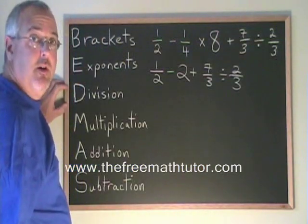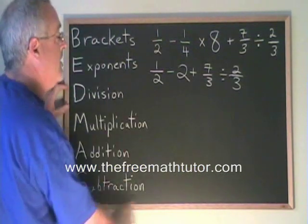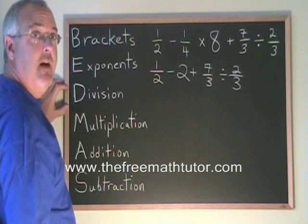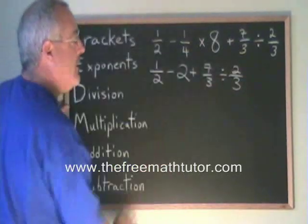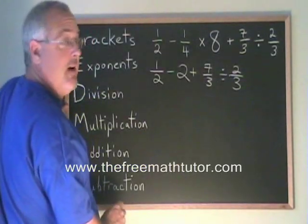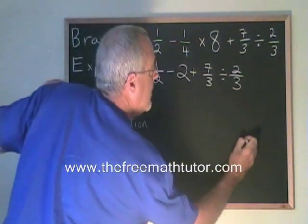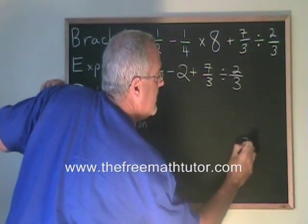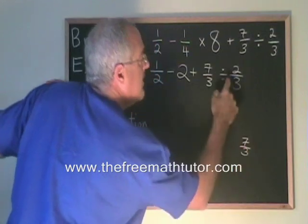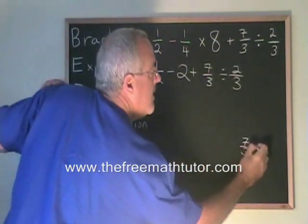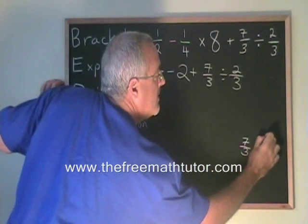The next operation that I have to do to respect BEDMAS is this division. And of course, to do a division of fractions, we turn the second fraction upside down and we multiply instead. So I'll do that over here. We have 7/3 divided by 2/3. We change that to times 3/2.